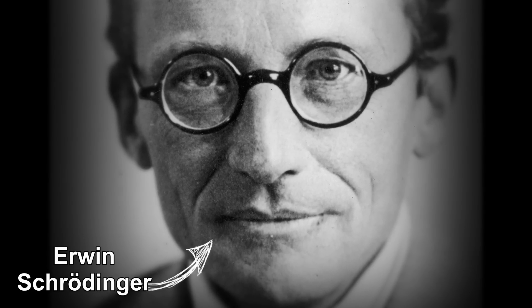Soon after de Broglie published his theory of the wave-particle duality of electrons, Austrian physicist Erwin Schrödinger investigated whether the movement of an orbiting electron in an atom could be better explained as a wave rather than a particle. And he got to work determining an equation to describe this wave system.